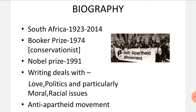Besides this, Nadine Gordimer was also an activist in the anti-apartheid movement. Apartheid was a system — a government policy — where there was racial segregation or racial discrimination against the non-white people of Africa. There was a division between white and non-white people of Africa that existed in South Africa from 1948.